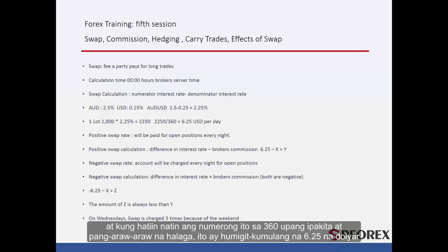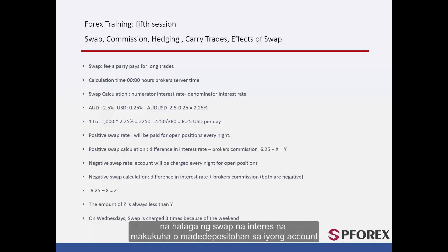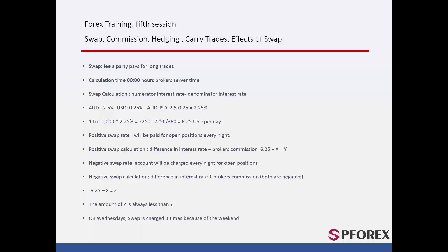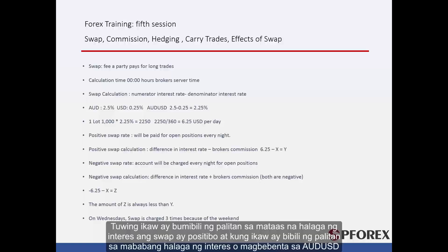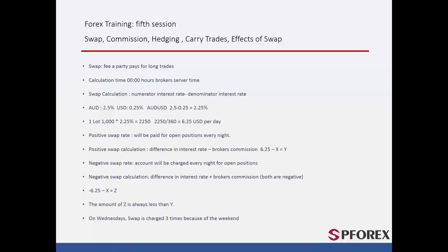If we divide that number by 360 to indicate daily amounts, it is approximately $6.25 of swap interest value that will be withdrawn from or deposited to your account. This depends on whether you are buying or selling in your position. Whenever you buy an exchange with a higher interest rate, swap will be positive, and if you buy an exchange with a lower interest rate or sell in Australian dollars versus US dollars, swap will be negative.